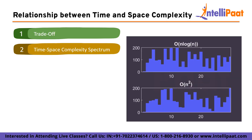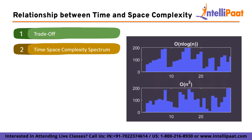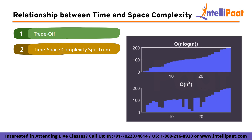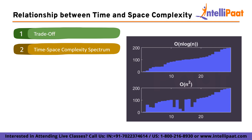Algorithms can exist at different points along the spectrum of time-space complexity. At one extreme, there are algorithms that prioritize time efficiency, often requiring more memory or space to achieve faster execution. At the other extreme, there are algorithms that prioritize space efficiency, using less memory but potentially sacrificing speed.